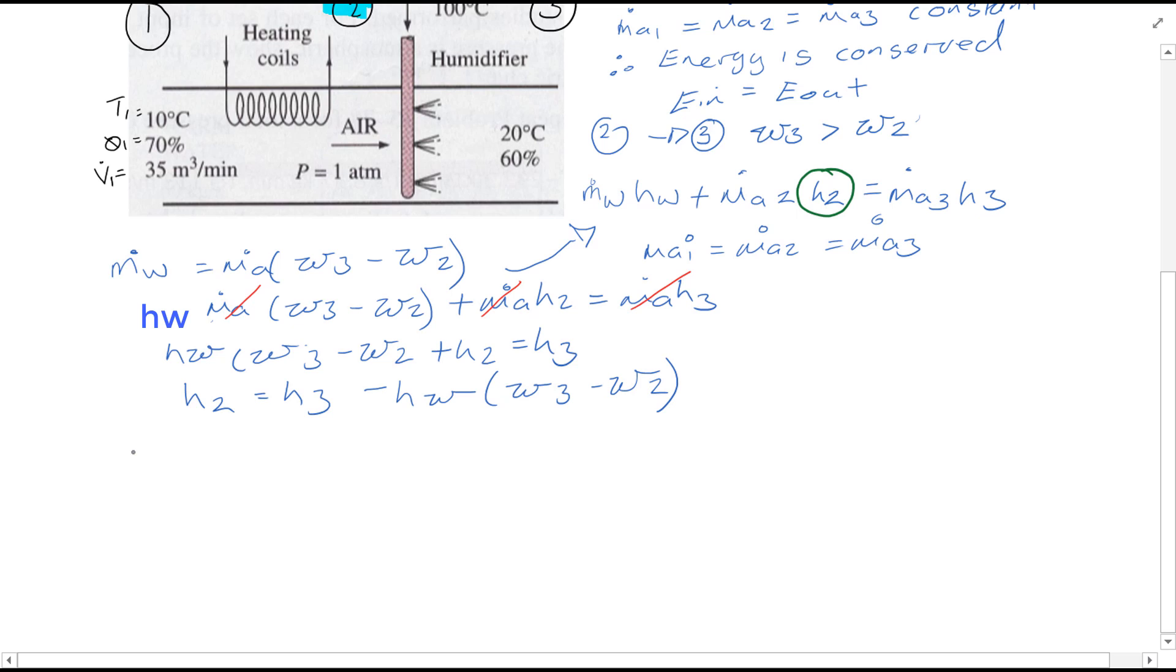So from the chart, we're given two values at 0.3, so therefore it's possible to find H3, which is equal to 42.5 kilojoules per kg, and omega 2 is equal to omega 1, which is as we previously calculated by using the chart.